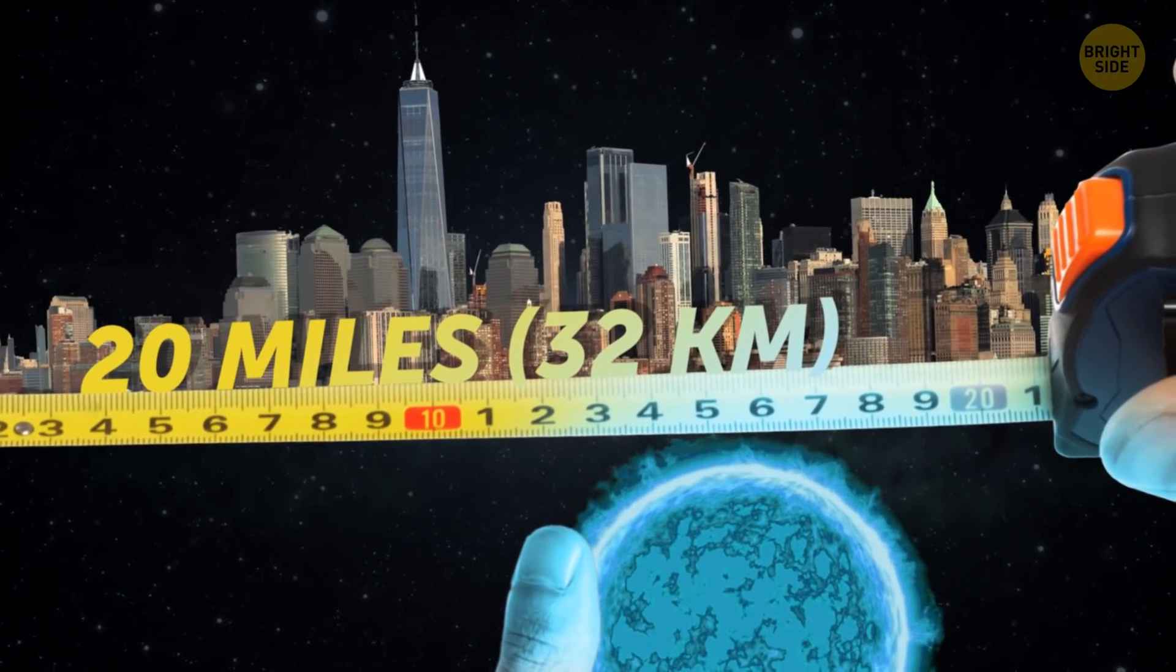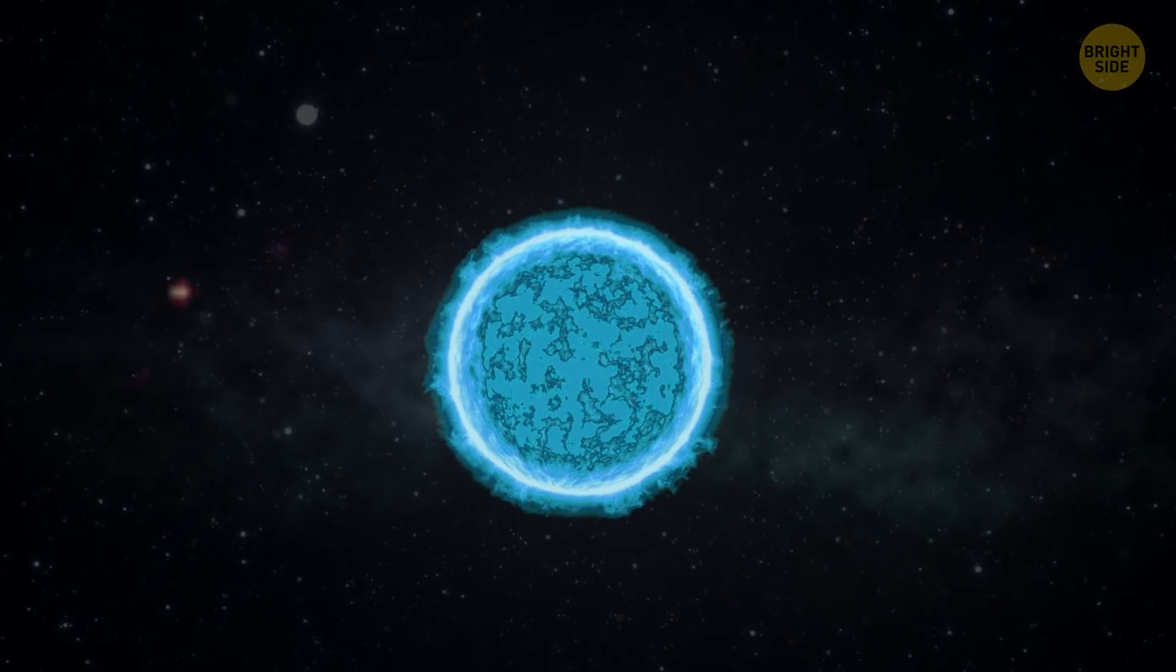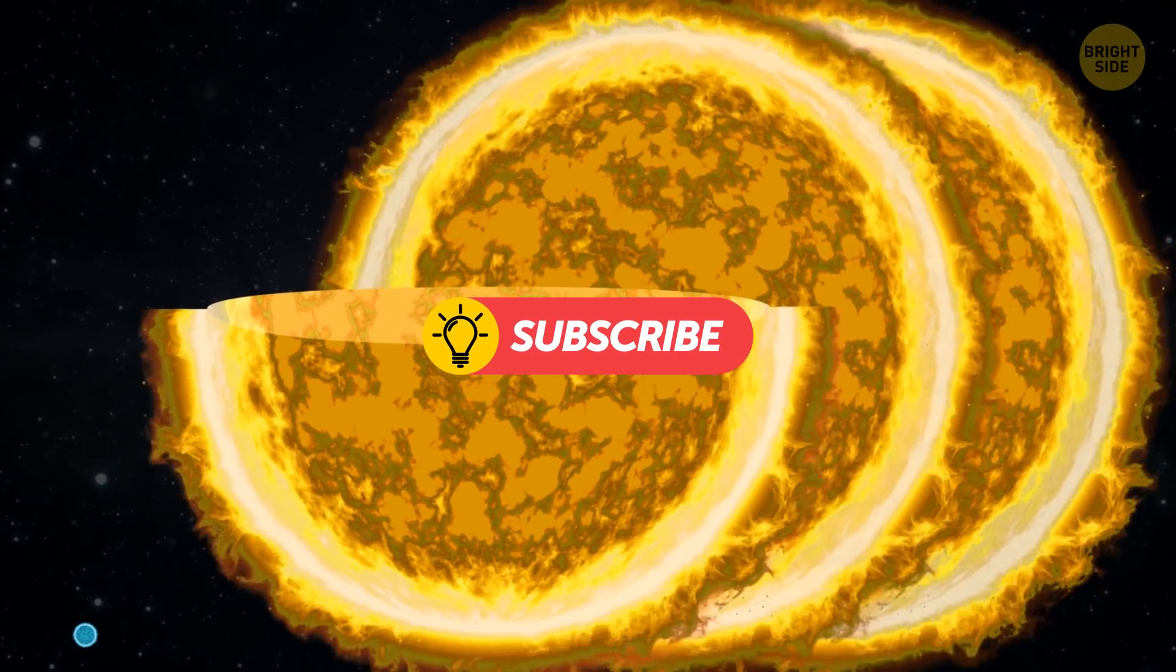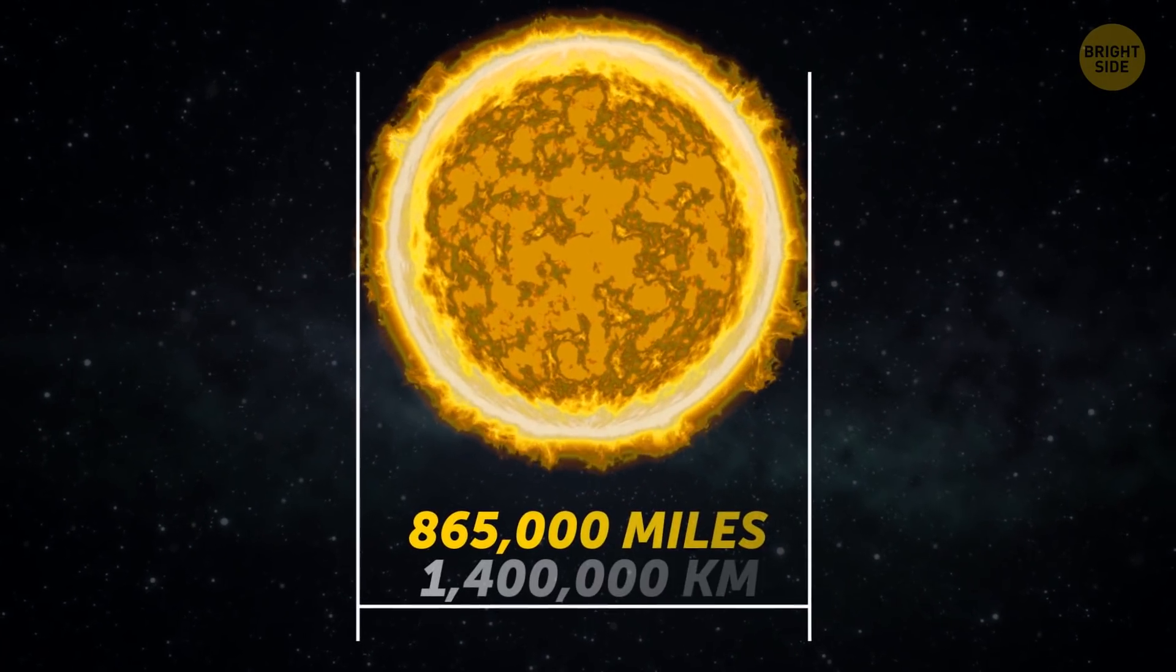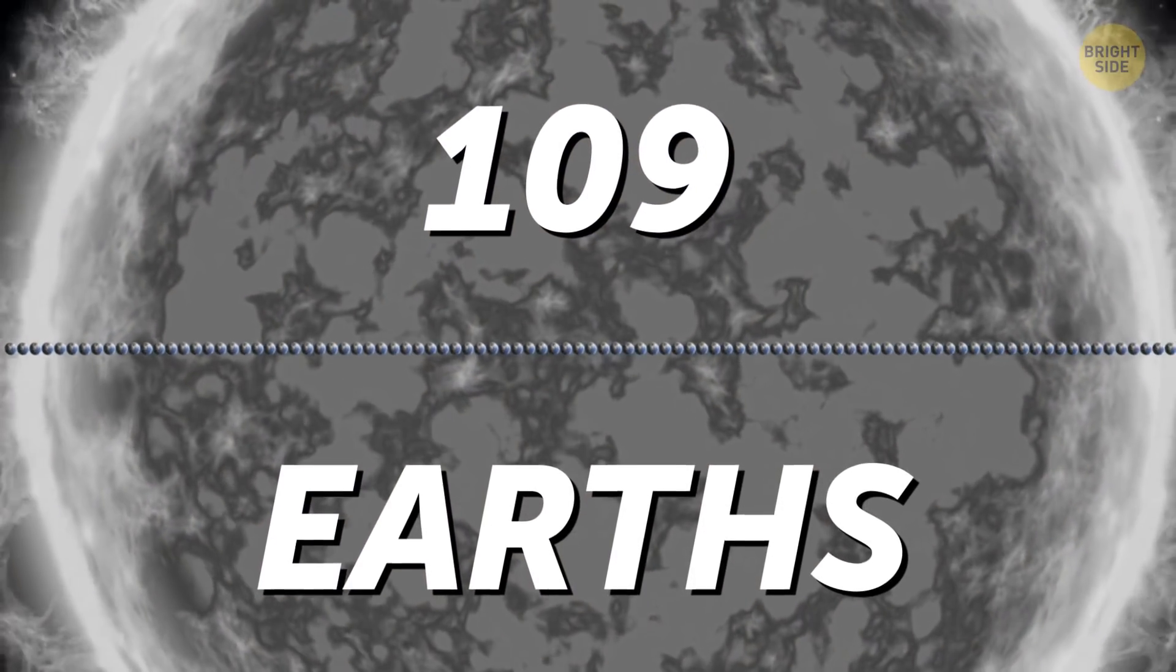But even with such a modest size for a celestial body, any neutron star will be at least two and a half times heavier than the Sun. And mind you, our Sun is nearly 865,000 miles in diameter, which is 109 Earths put side-to-side.